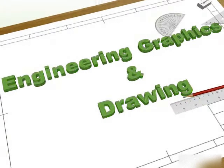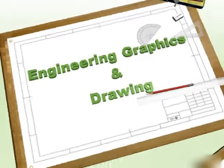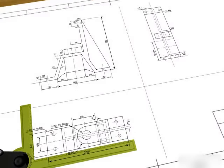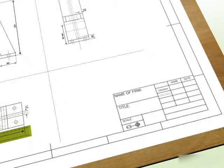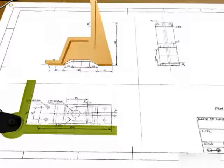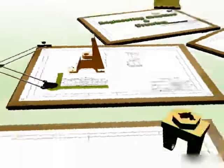Engineering drawing is a technique of creating graphical representation that contains all necessary information such as dimensions, specifications, and notes, using which an abstract concept can be transformed into a real-world entity.